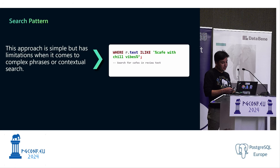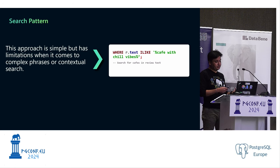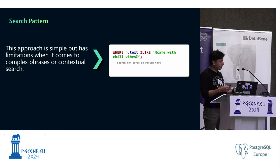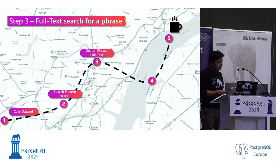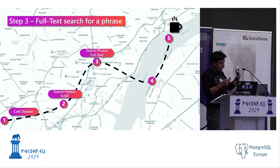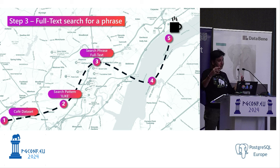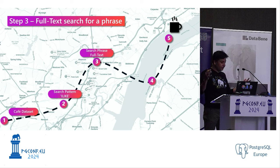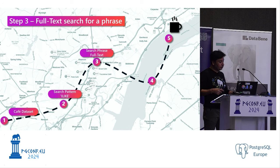This approach is simple but has limitations for complex comparisons. Searching for 'cafe with chill vibe' doesn't even return anything. We semi-worked with iLike but didn't get what we want. So I'm going to move up the chain to full-text search.